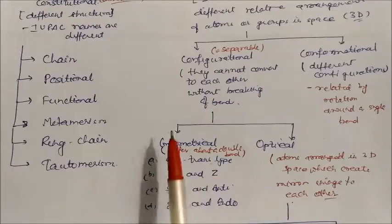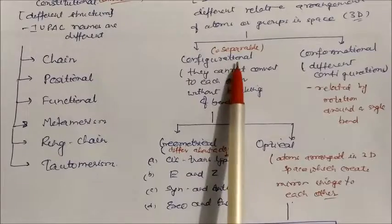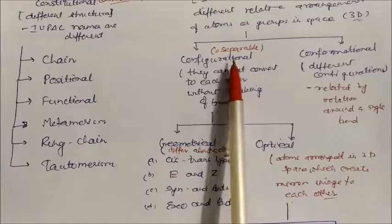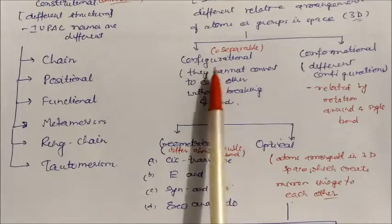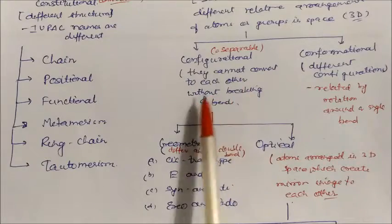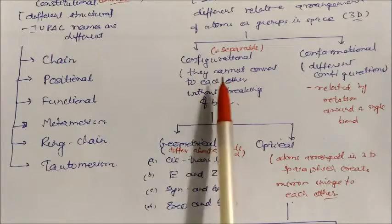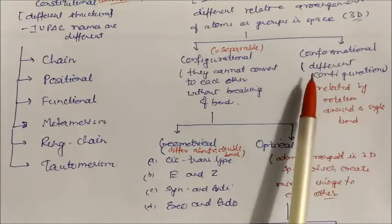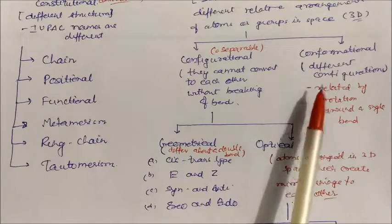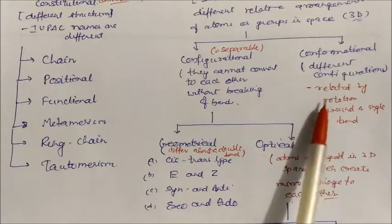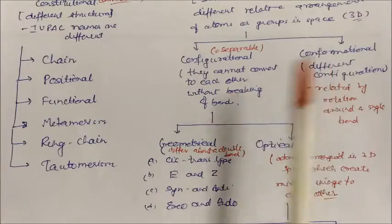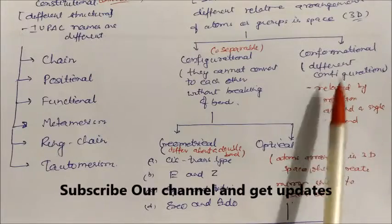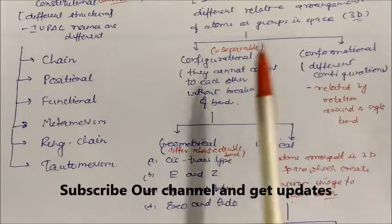In stereoisomerism we have two types: configurational isomerism and conformational isomerism. Configurational isomers are separable — they cannot be converted to each other without breaking bonds. Conformational isomers have different configurations due to rotation around a single bond. Rotation around a single bond is possible, whereas in configurational isomers you have to break the bond.